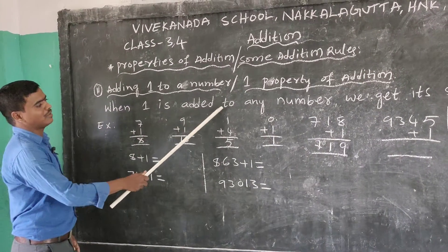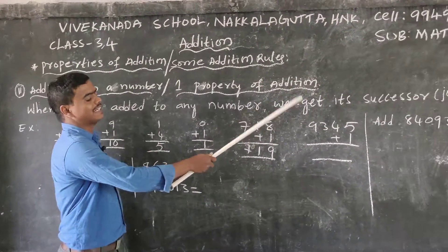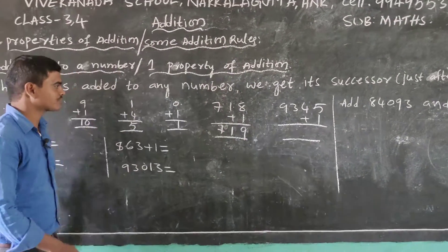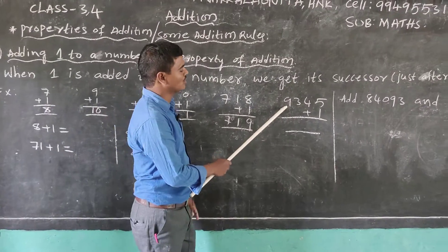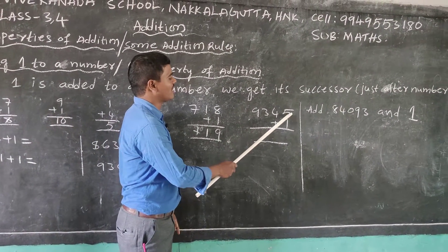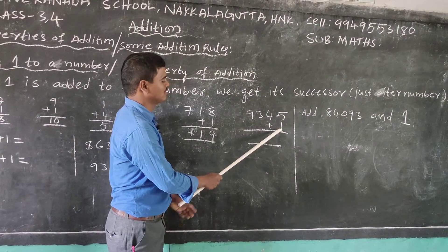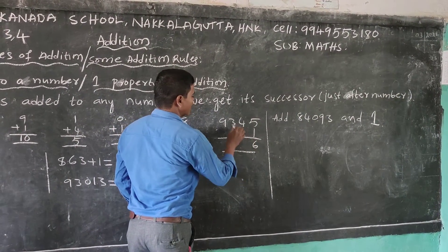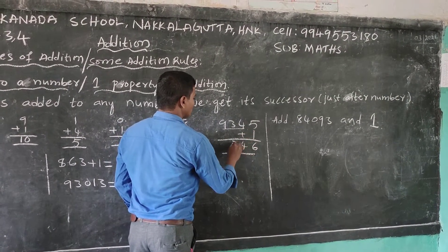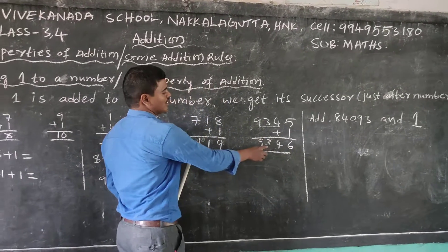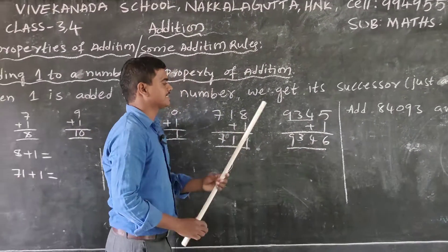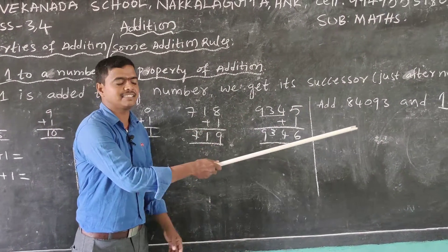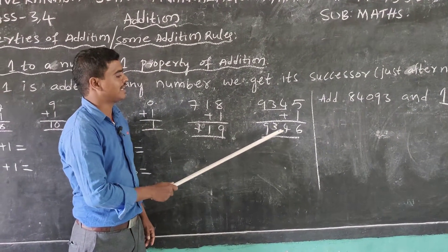When 1 is added to any number, we get its successor — the just-after number. Next: 345 plus 1. We do the ones place: 1 plus 5 equals 6. The remaining digits stay the same — 4 and 3 — so the answer is 346. The successor of 345 is 346.